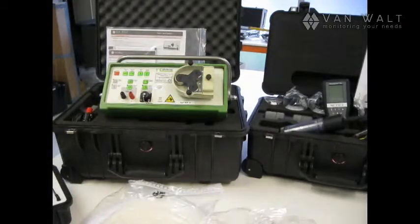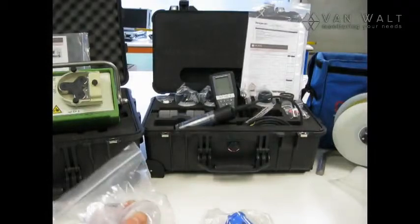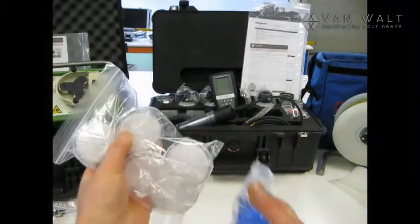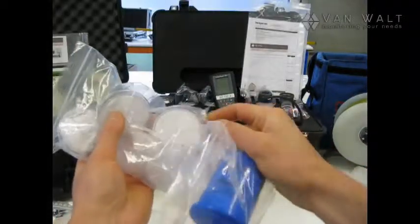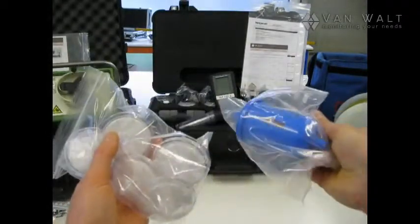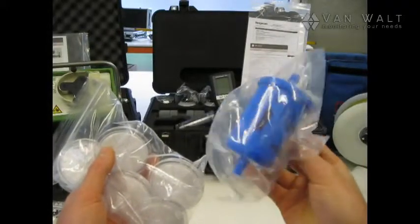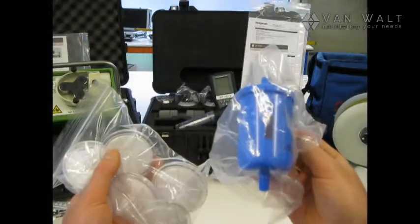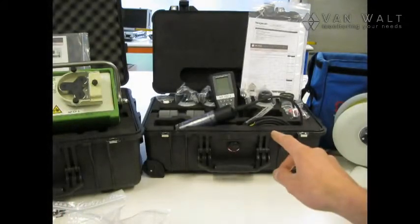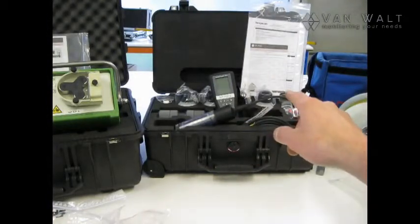Also we have some filters, 0.45 micron filters and these are 20cm square area and if you're sampling particularly dirty water we have the same micron but a much larger 350 square meter area. As you can see in the back there we have the ubiquitous YSI with flow cell and calibration fluids.